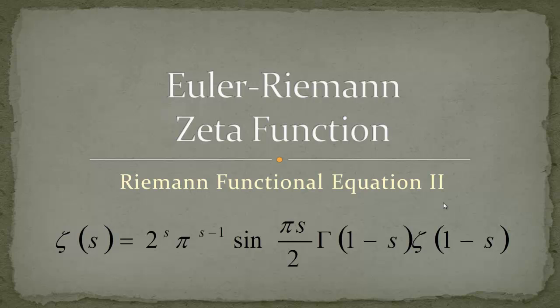Let's have a look at this monster. Zeta of s is equal to 2 to the s, pi to the s minus 1, sine of pi·s over 2, gamma of 1 minus s, and zeta of 1 minus s. If you look at this combination of sine and gamma, it should remind you of the Euler reflection formula.